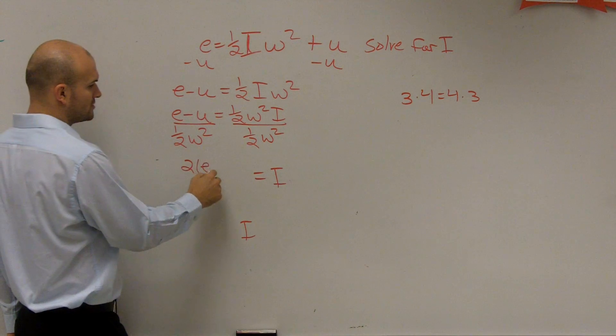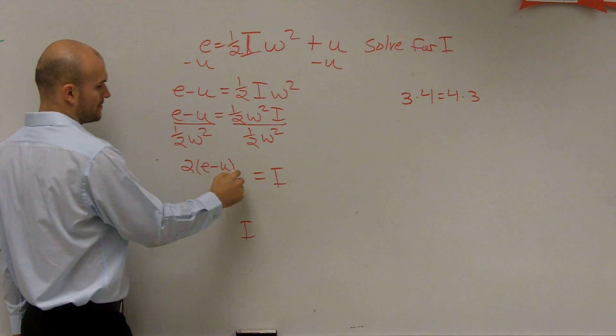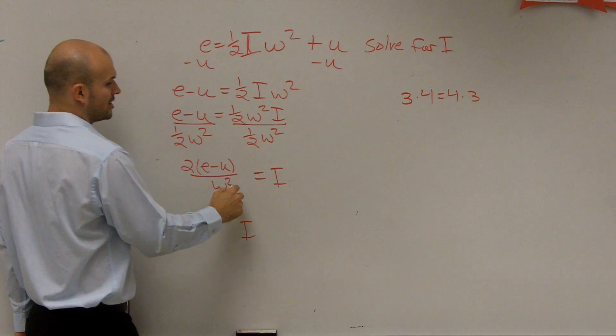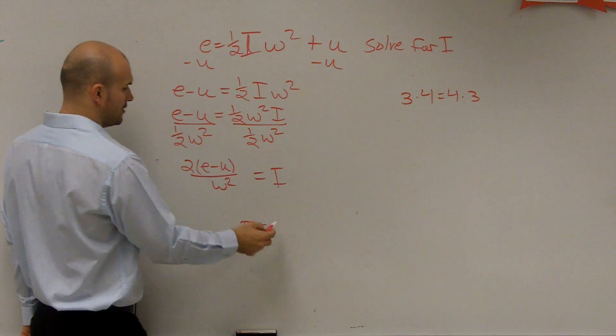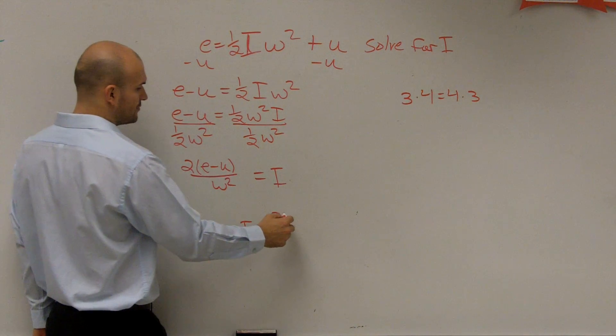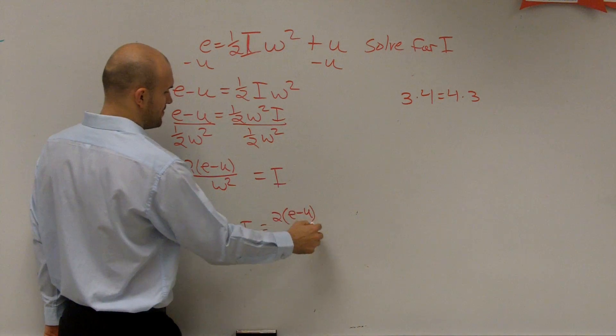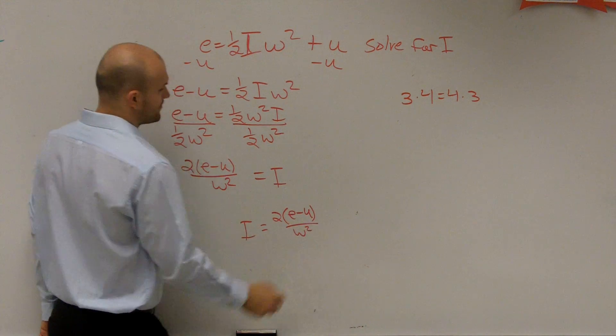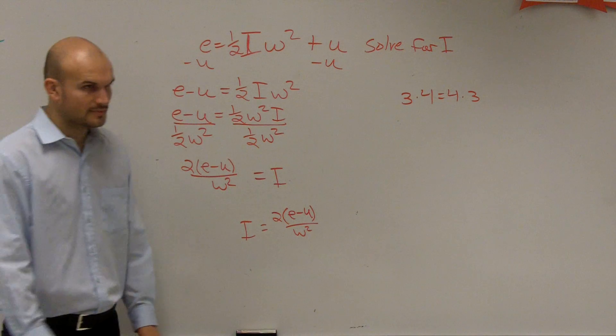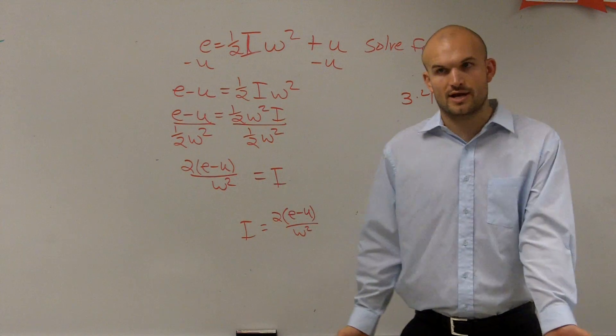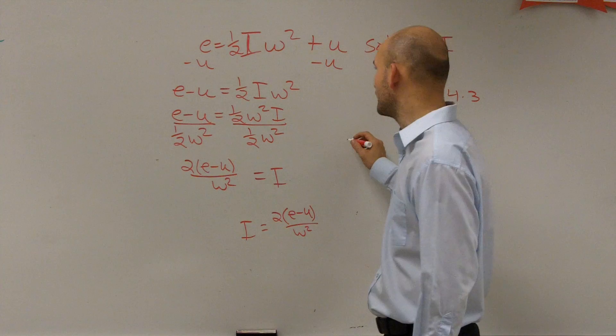So really what I get is two times e minus u divided by w squared equals i, which we can just rewrite as i equals two times e minus u divided by w squared. That's one way you guys can look at it.